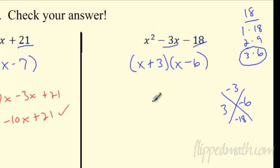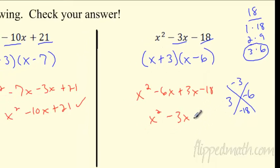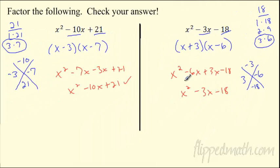Quick check — double distribute: x times x is x², x times negative 6 is negative 6x, 3x, and minus 18. You can see all the stuff we were undoing with our magic X — we're redoing it here. That is definitely checked and works out. This is the factored form.